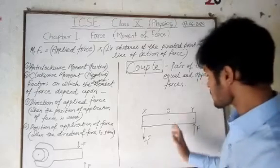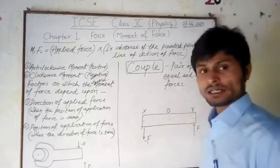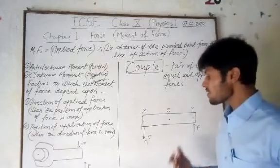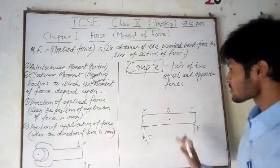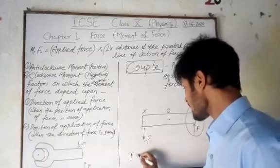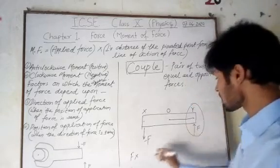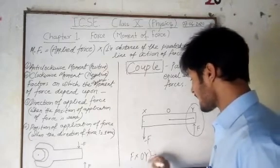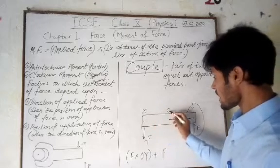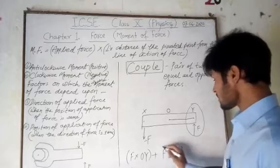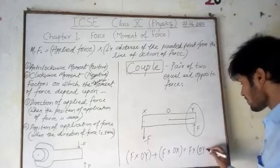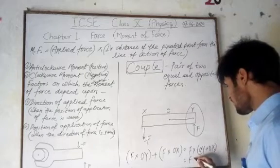Couple is actually the pair of two equal and opposite forces applied on the two ends of a body which is pivoted at the central axis and is about to rotate. To calculate the moment of these two forces: the first moment at point Y will be F into OY, which is the perpendicular distance. This is added with another moment, which is F into OX. So these are the two moments; if we add those, we get F into (OY + OX).